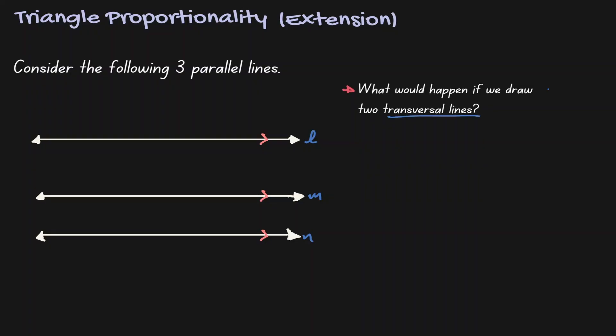Remember that transversal lines are lines that intersect parallel lines. So let's draw one of those lines in purple. Let's name the intersections. Let's call them ABC.